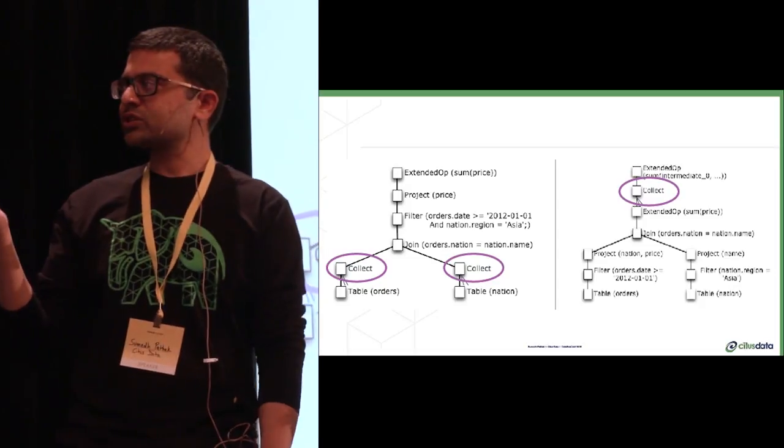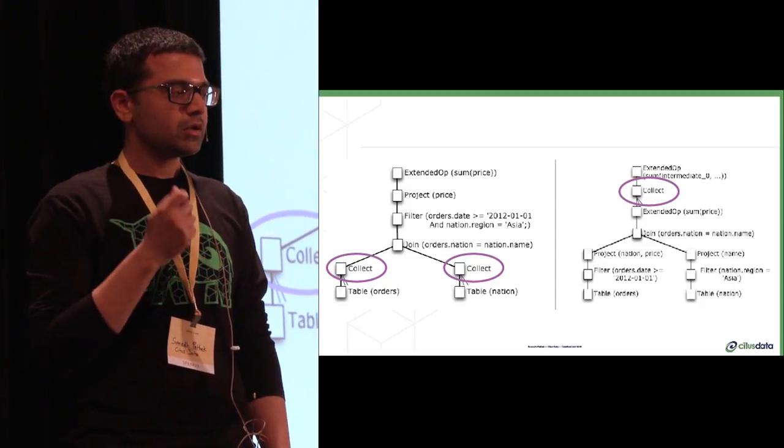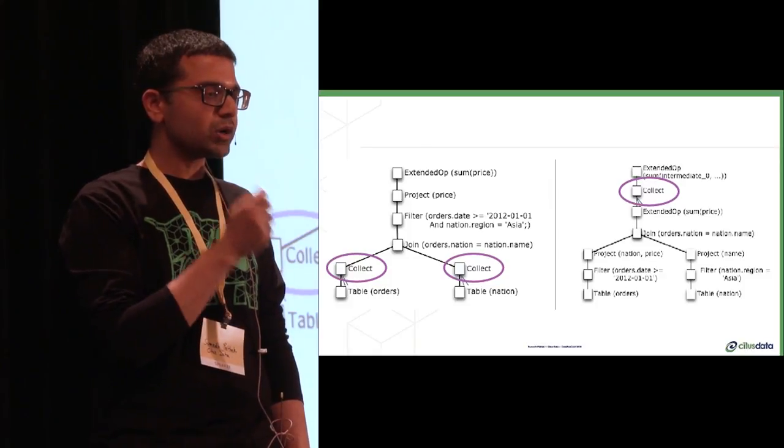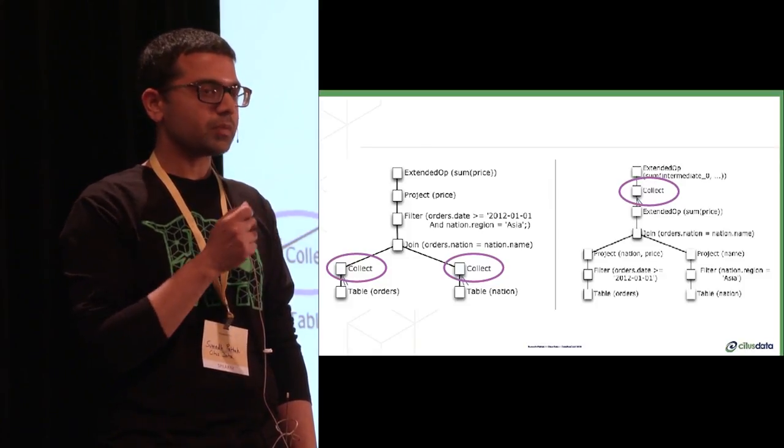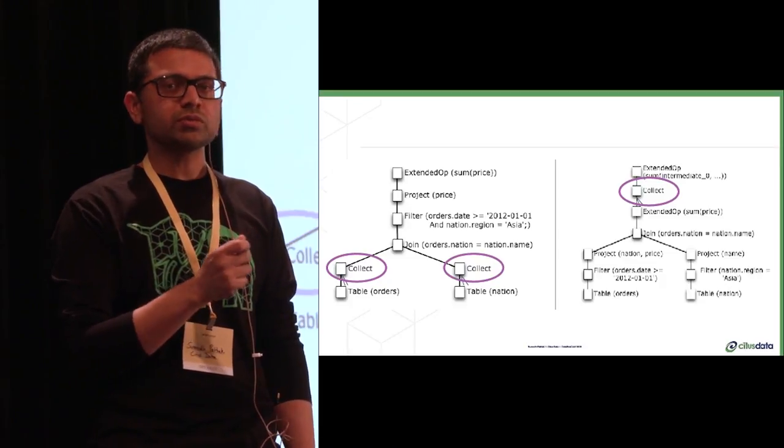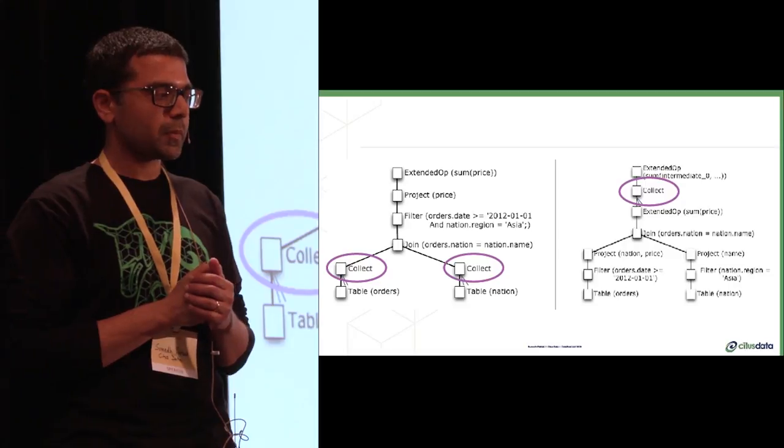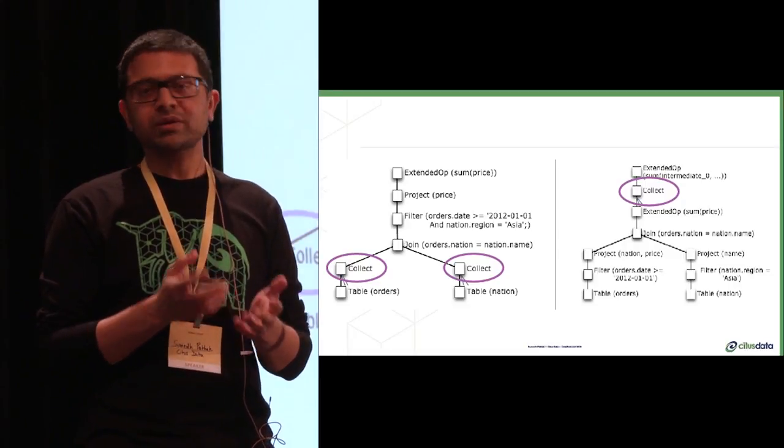So this is what the transformation actually looks like for the relational algebra tree. The important thing to note is that we've pulled up the collect further up the tree, which means that you're pushing down computation to the worker nodes before we need to collect the data onto one single node. So this means better parallelization and better performance.